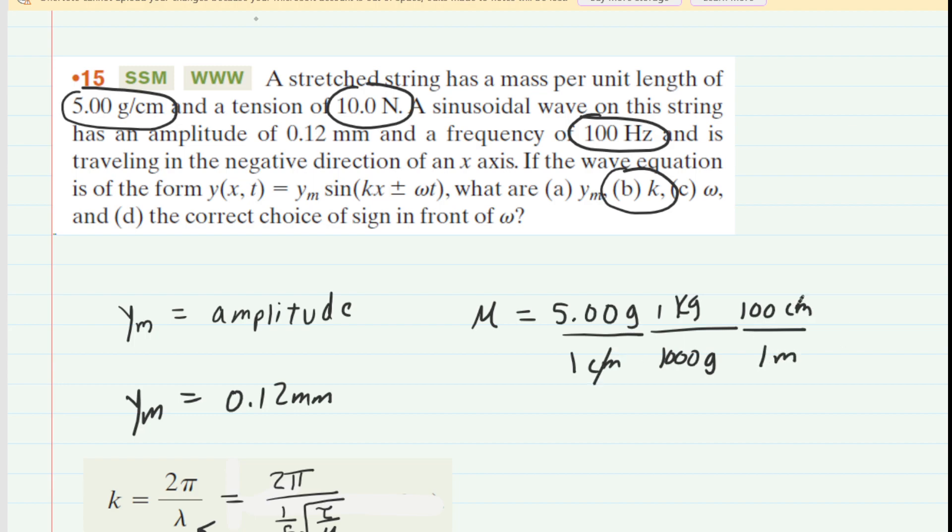So that setup cancels out the centimeters and the grams. Let's pick up our calculators and process that. And when we do that, we get a value for this mass per unit length of 0.5 kilograms per meter.